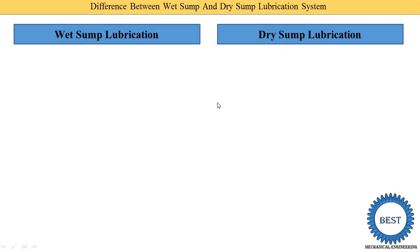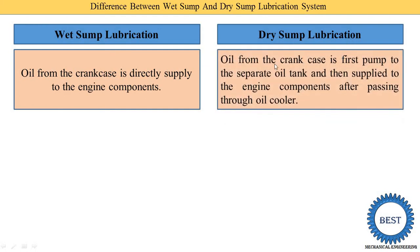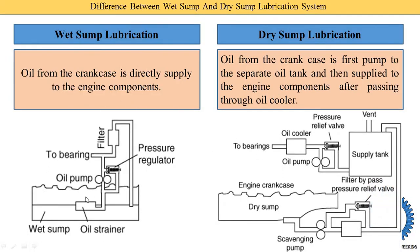In a wet sump lubrication system, oil from the crankcase is directly supplied to the engine components — we will understand this using the image. As you can see here, this is the crankcase and the oil from the crankcase is directly supplied to the various components such as the bearings.